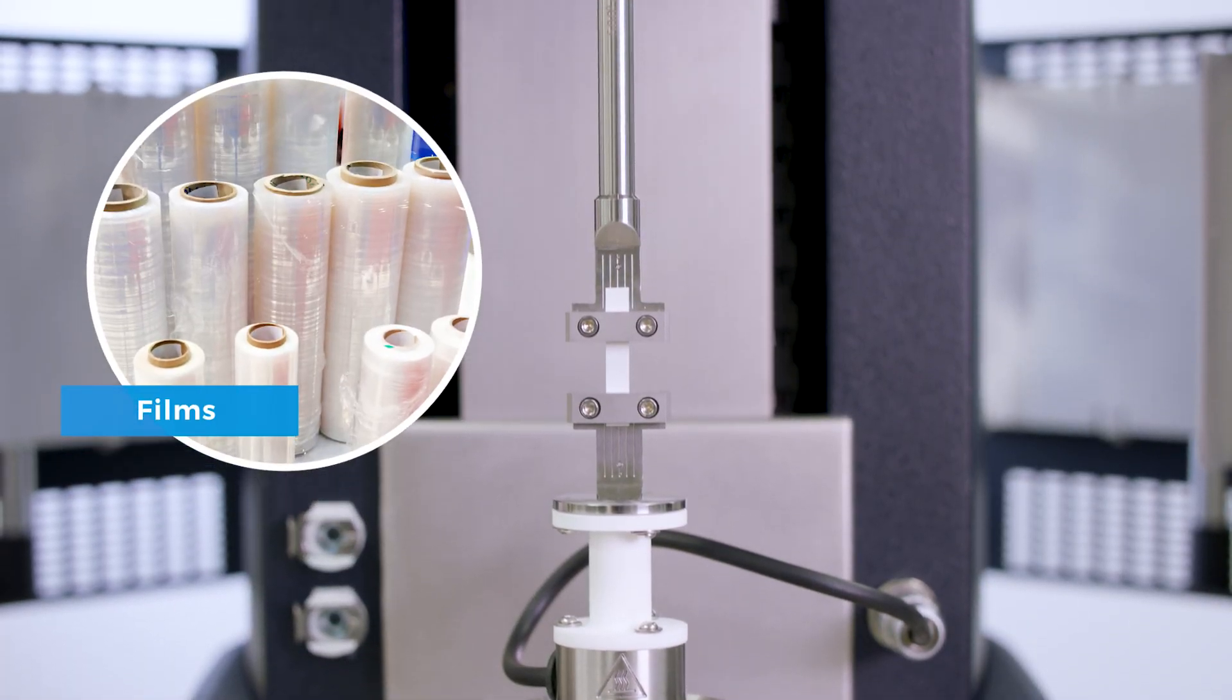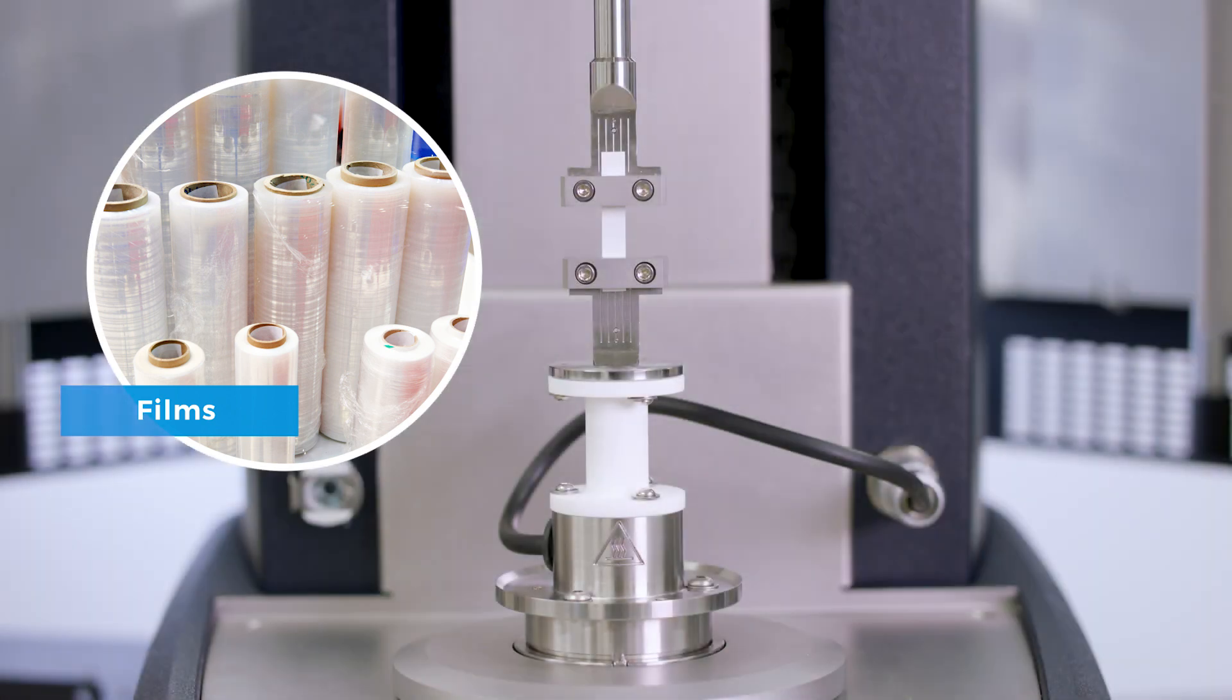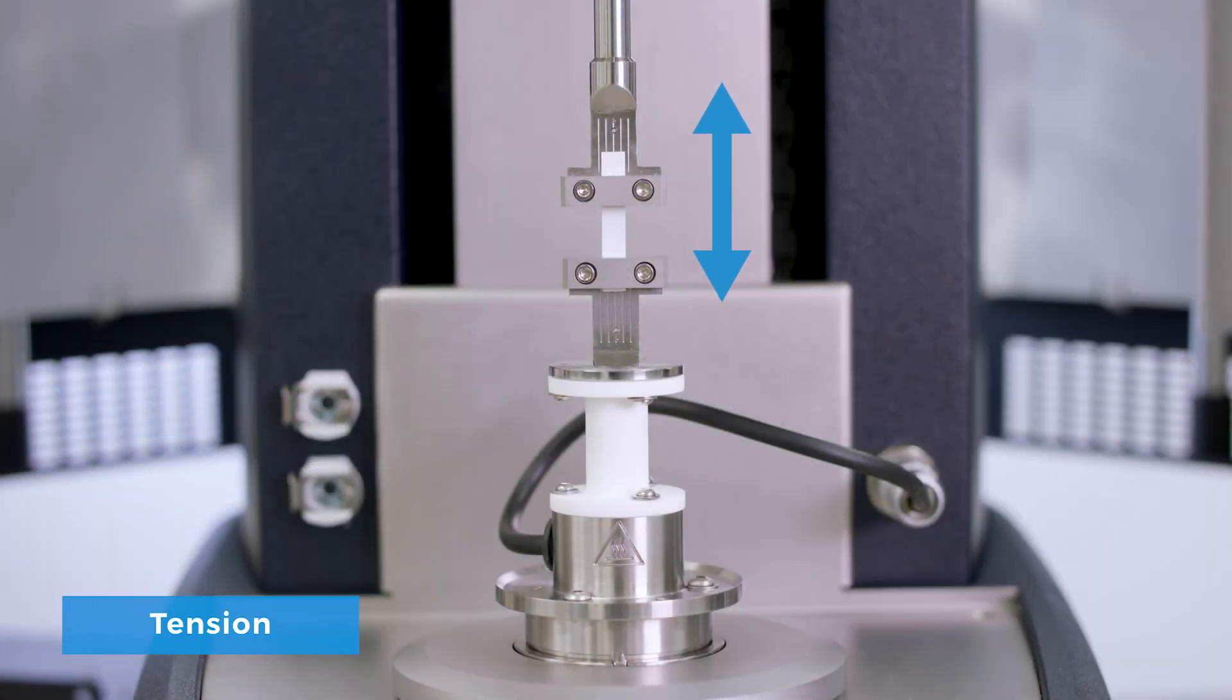For samples that are thin films or sheets less than half a millimeter in thickness, the film tension geometry can be used to perform the measurement in the tension mode.